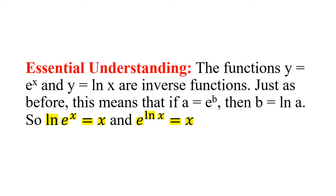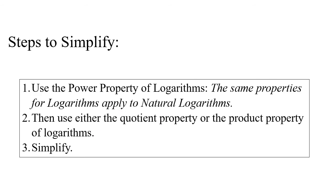The essential understanding for this section is that the functions y = e^x and y = ln(x) are inverse functions. This means that if a equals e to the b, then b equals the natural log of a. So natural log of e^x equals x, and e to the natural log of x equals x — they undo each other.